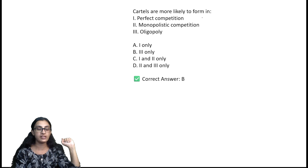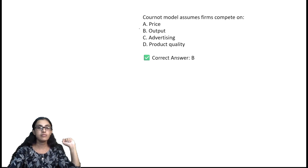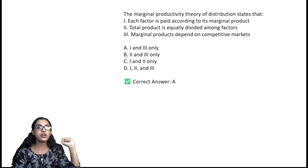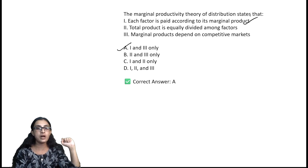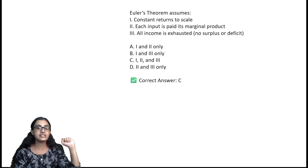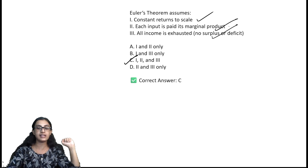Cartels are more likely to form in oligopoly — option B. The Cournot model assumes firms compete on output — option B. The marginal productivity theory of distribution states that each factor is paid according to its marginal product, which depends on competitive markets — option A. Euler's theorem assumes constant returns to scale, each input is paid its marginal product, and all income is exhausted — option C.